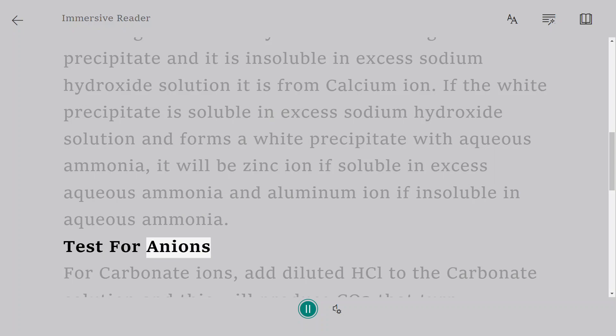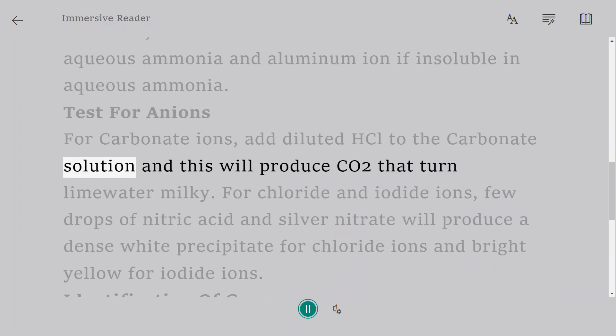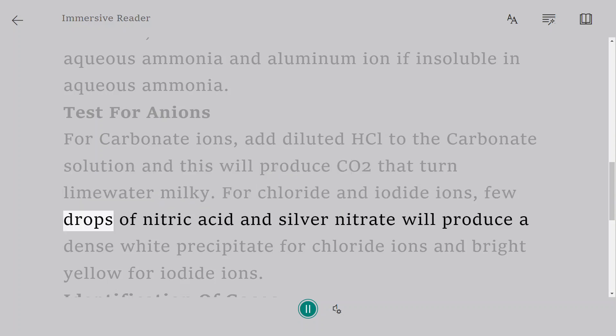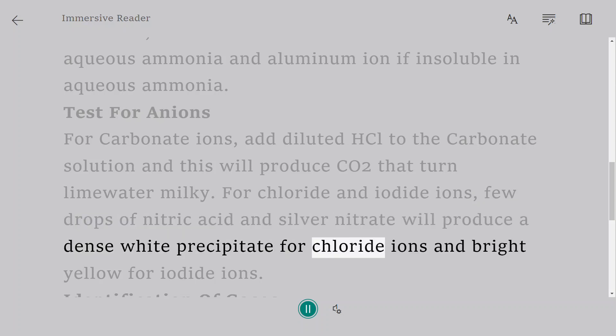Test for anions. For carbonate ions, add diluted HCl to the carbonate solution and this will produce CO2 that turns lime water milky. For chloride and iodide ions, few drops of nitric acid and silver nitrate will produce a dense white precipitate for chloride ions and bright yellow for iodide ions.